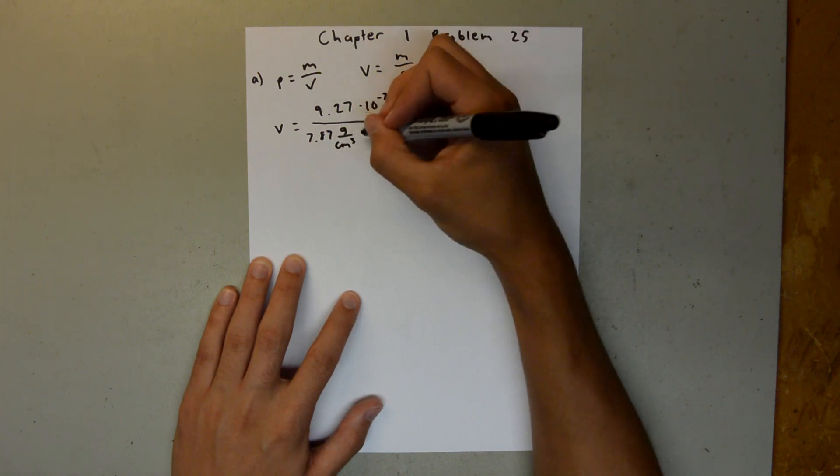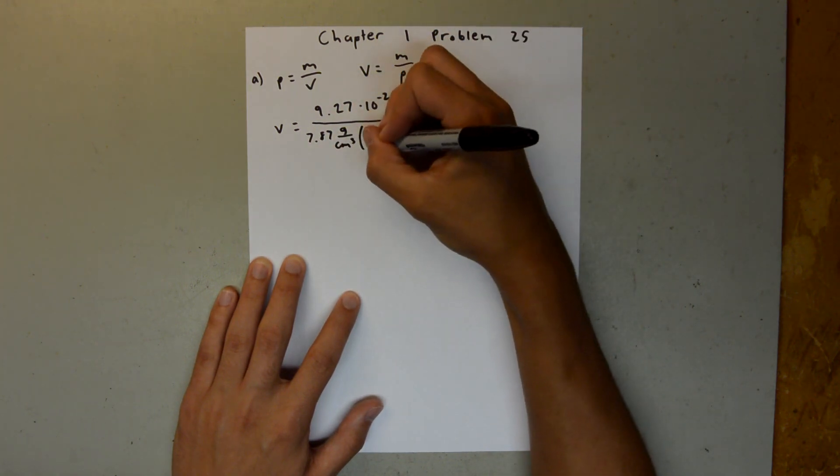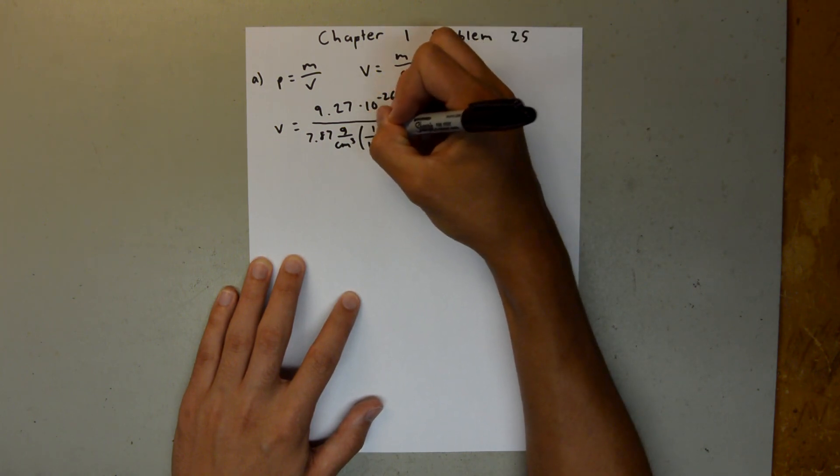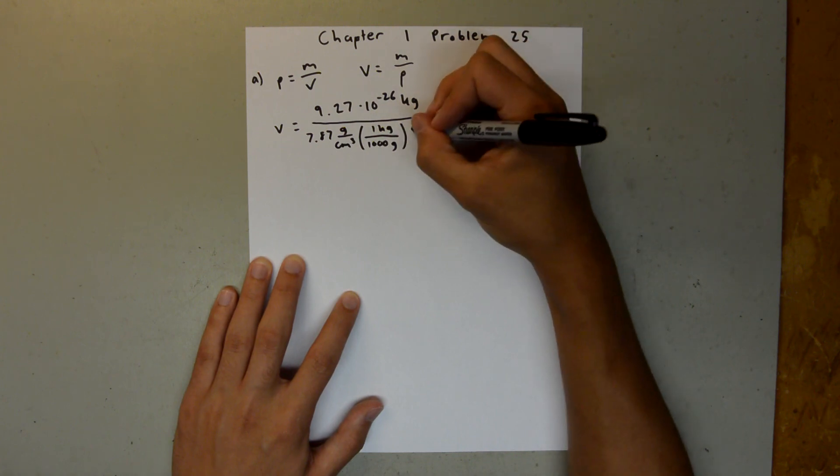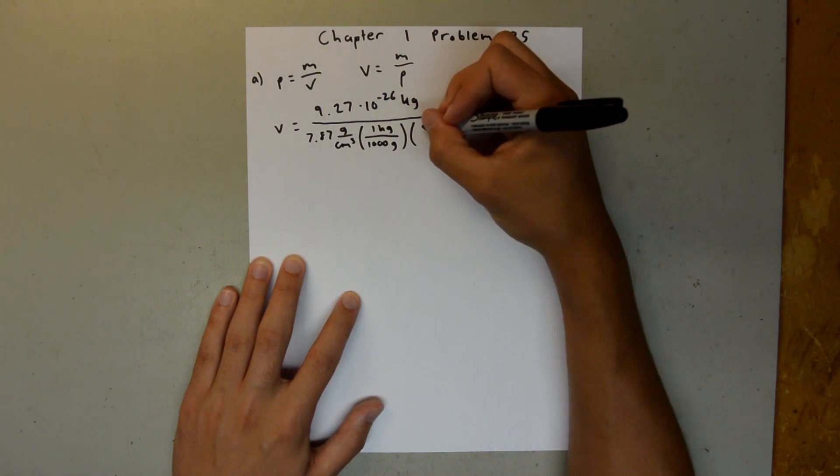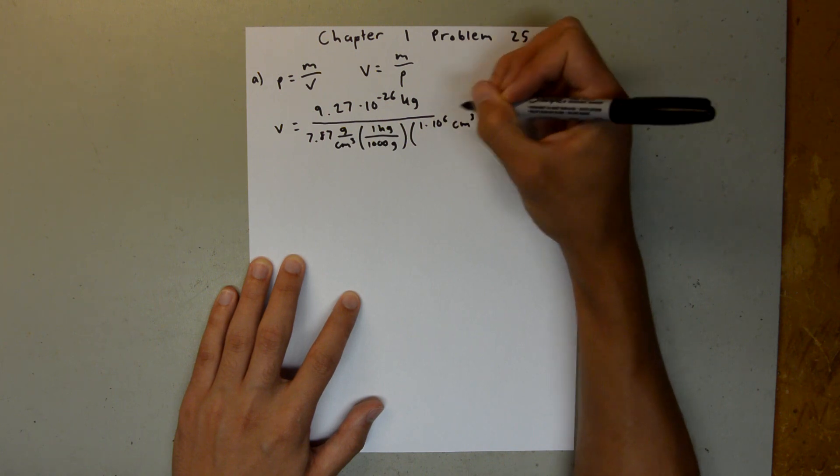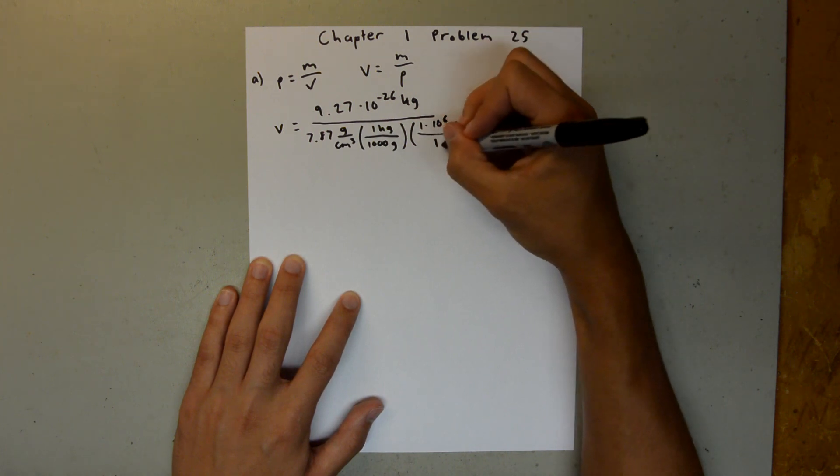And we know that there are 1,000 grams in one kilogram, and we know that there are 1 times 10 to the sixth cubic centimeters in one cubic meter.